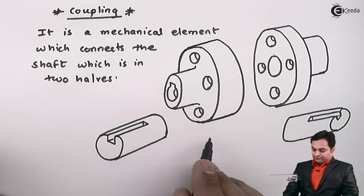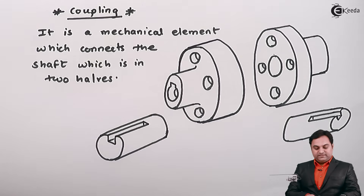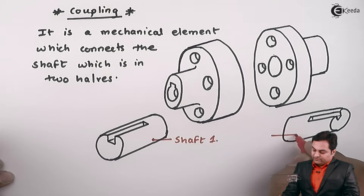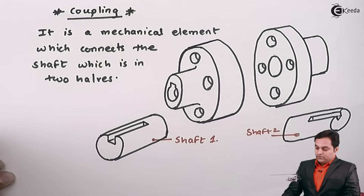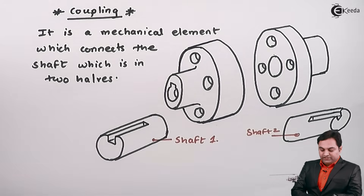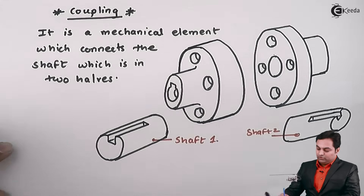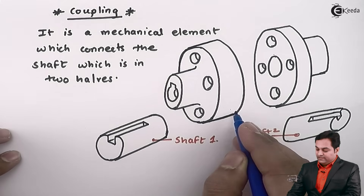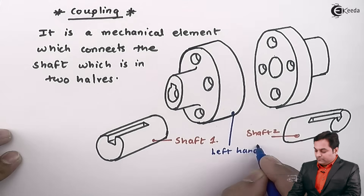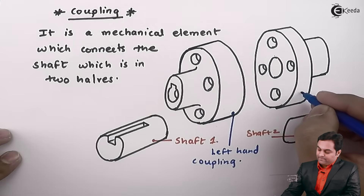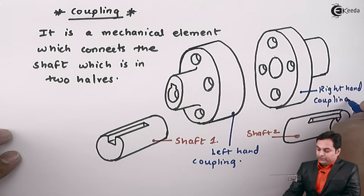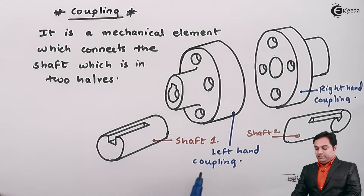Now how this connection takes place — here in the diagram there are two shafts: shaft one and shaft two. When you want to connect these two shafts, we take shaft one and insert it into this device called the coupling. On the left hand side we have the left hand coupling, and on the right hand side we have the right hand coupling.